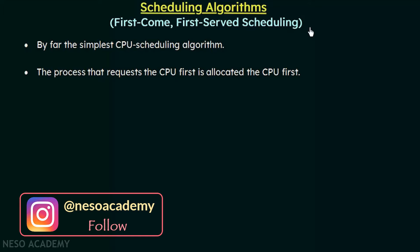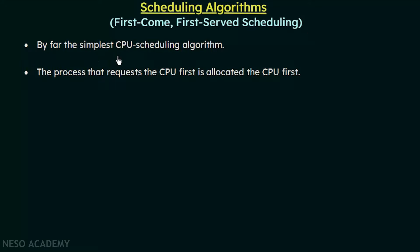This first come first served scheduling algorithm is by far the simplest CPU scheduling algorithm. From the name itself, it is easy to understand that first come first served means the process that requests the CPU first is allocated the CPU first. The first process that requests the CPU will be given the CPU, then the second, then the third, and so on. It is a very simple method that can be followed, implemented, and understood.